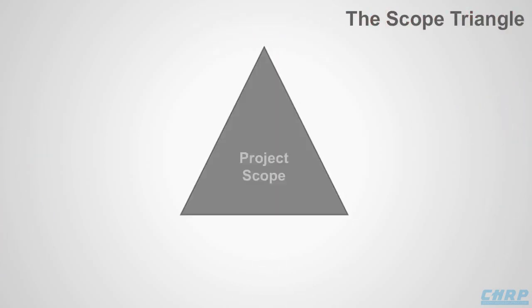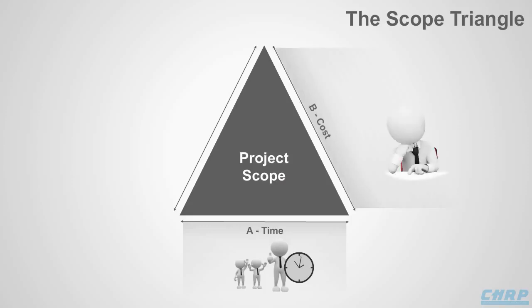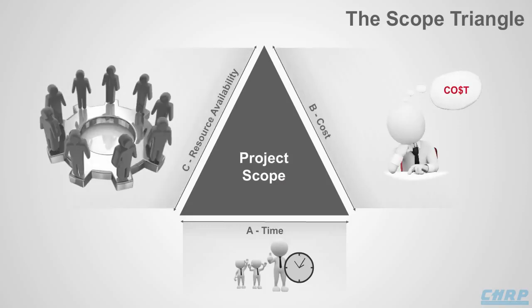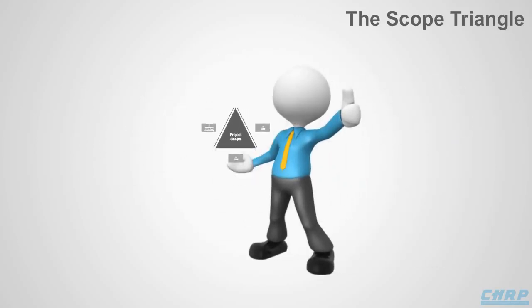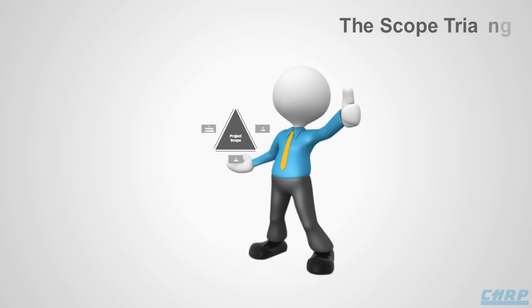Now, let's look at the project scope triangle. The scope and quality of a project are influenced by constraints like time, cost, and availability of resources. The three sides of the triangle represent the constraints within which the objectives of a project are to be accomplished. This dynamic system needs to be in equilibrium, which ultimately leads to the success of the project.